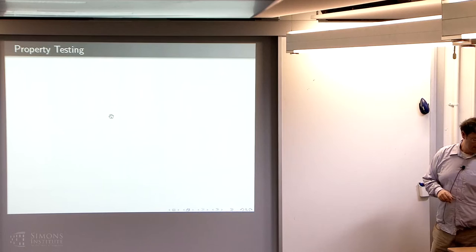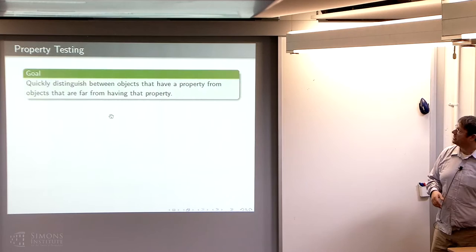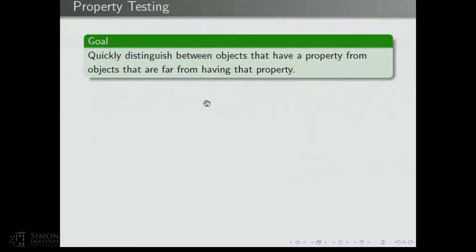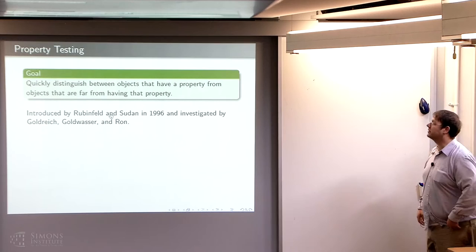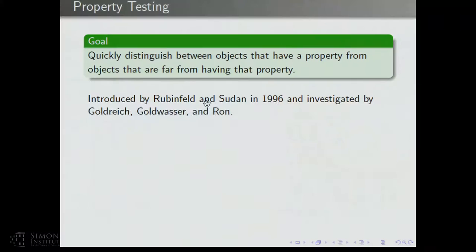The goal of property testing is to quickly distinguish between objects that have a property from objects that are far from having the property. If I gave you an enormous graph and wanted you to quickly tell me whether there's a triangle, and you weren't allowed to look at the whole graph, this is an impossible task. But maybe it's possible to distinguish between a graph that's triangle-free from one that's far from triangle-free — where you'd have to delete at least epsilon n-squared edges to make it triangle-free. This area was originally introduced by Rubenfeld and Sudan in 1996 and since investigated for combinatorial properties by Goldreich, Goldwasser, and Rahn.